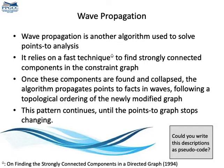This other way that we will see is called wave propagation. The idea of this algorithm is to separate the process of solving constraints into different phases. First, we find and collect cycles in the constraint graph, and then we propagate information. And only after that, we create edges. We keep iterating this process until the graph stops changing.